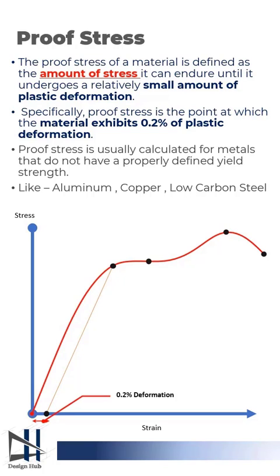Hence, proof stress or offset yield stress are more readily measured for such materials over yield stress. You can see in the diagram the proof stress location.